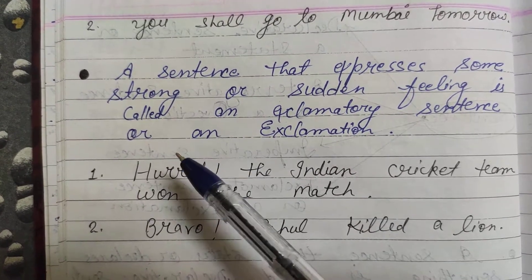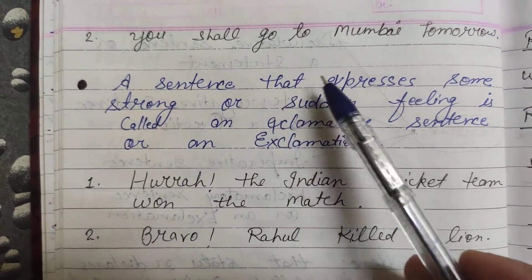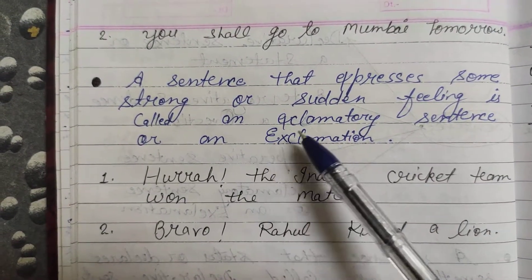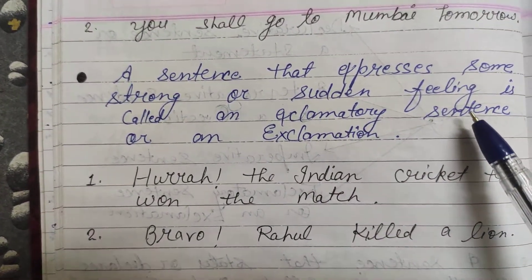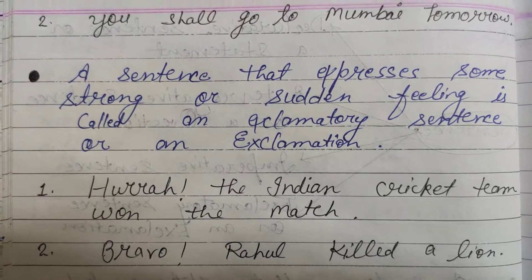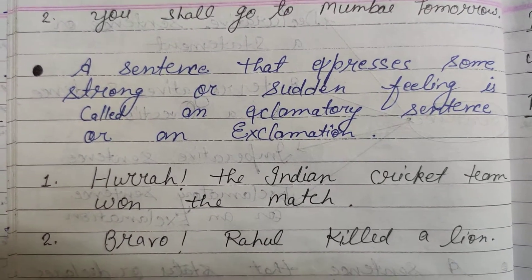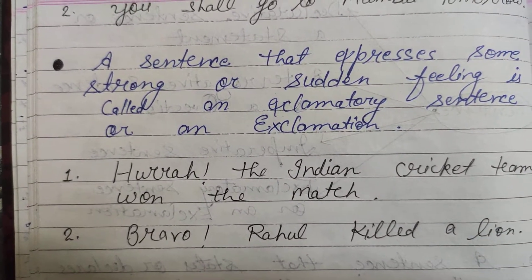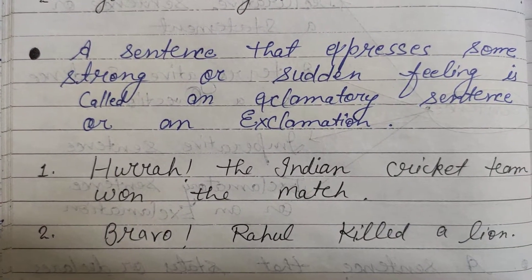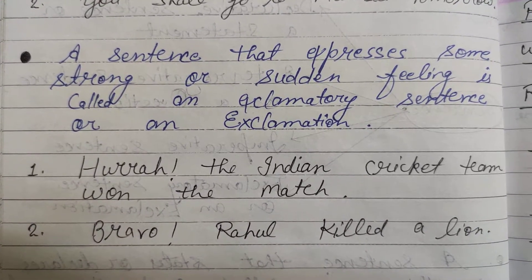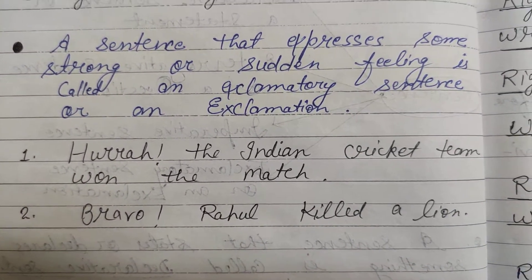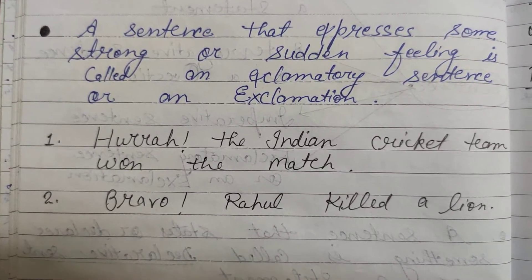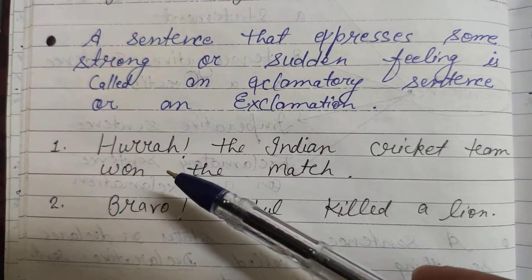Now at the last one — the exclamatory sentence, or an exclamation. A sentence that expresses some strong or sudden feeling is called an exclamatory sentence. Aise sentences jo sudden ya strong feeling ko express kare, jisko hum exclamatory sentence kehte hain. Words like 'hurrah,' 'bravo,' 'oh,' 'wow' start such sentences.